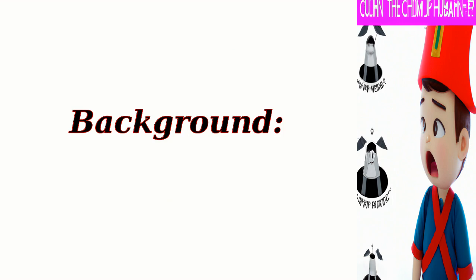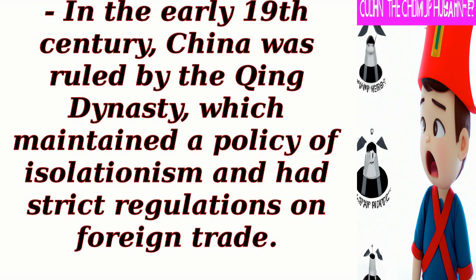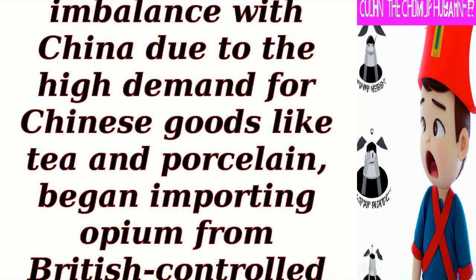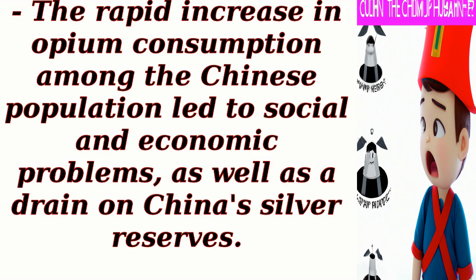Background. In the early 19th century, China was ruled by the Qing dynasty, which maintained a policy of isolationism and had strict regulations on foreign trade. British merchants, facing a trade imbalance with China due to the high demand for Chinese goods like tea and porcelain, began importing opium from British-controlled India to offset their trade deficits. The rapid increase in opium consumption among the Chinese population led to social and economic problems, as well as a drain on China's silver reserves.